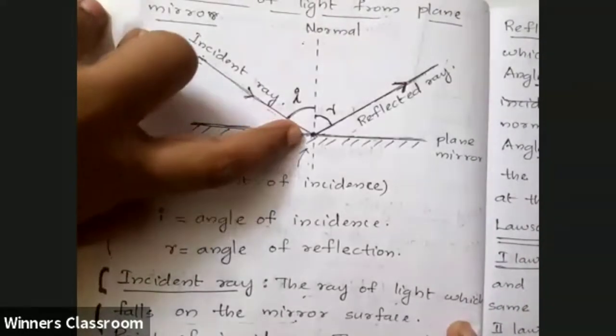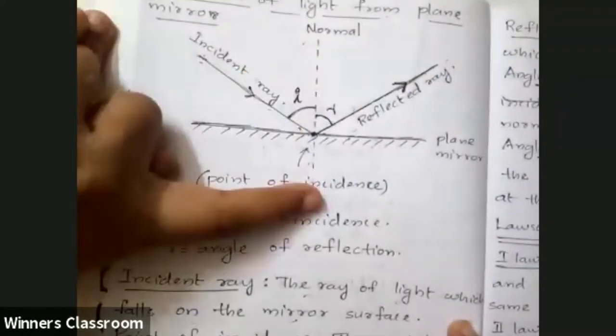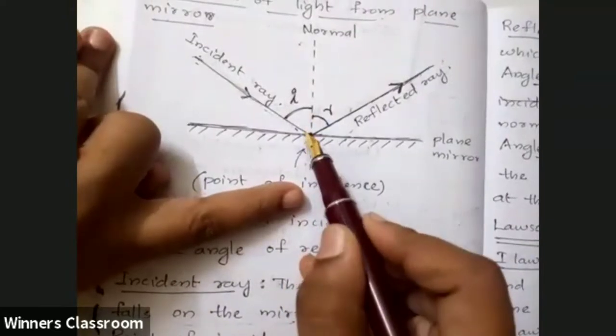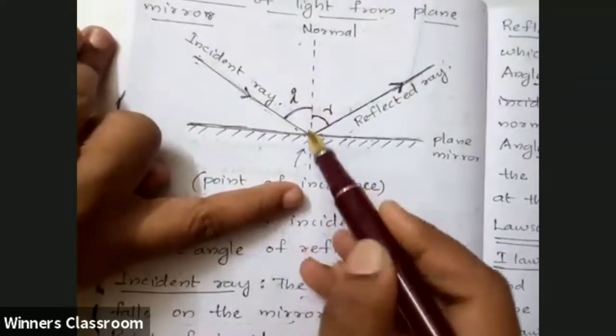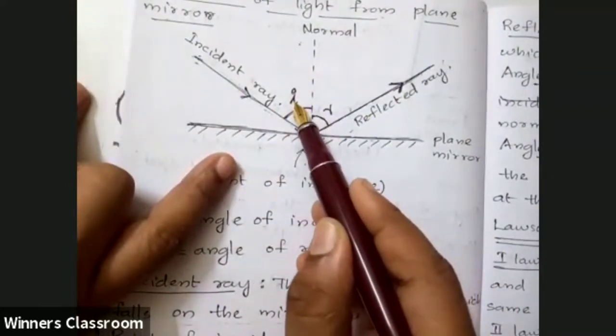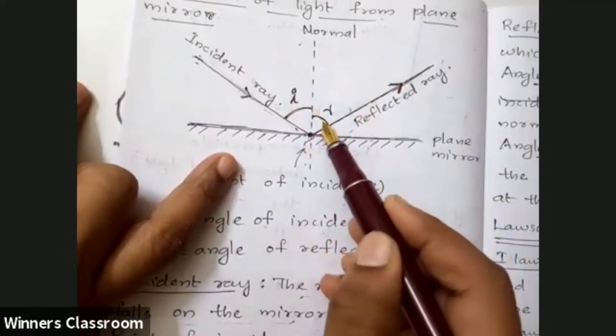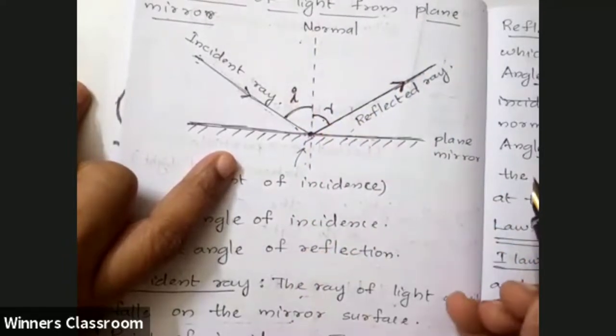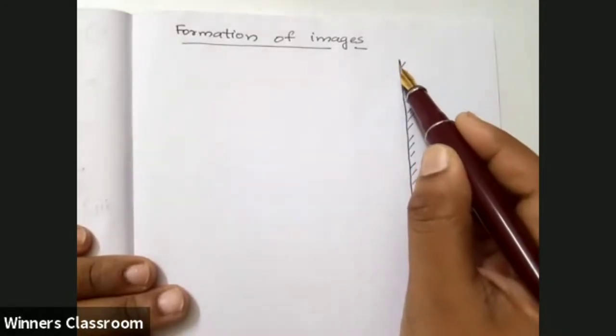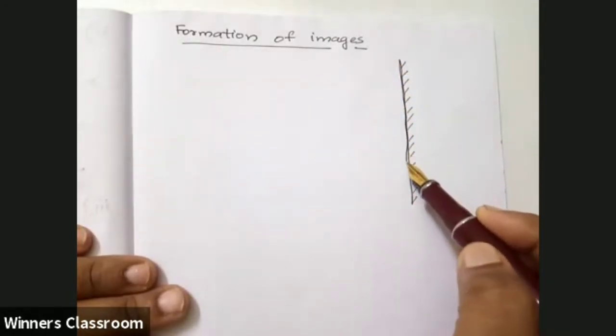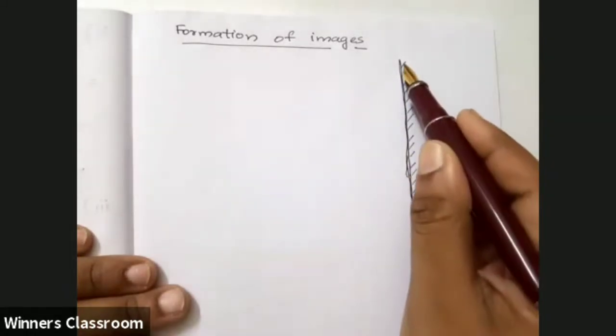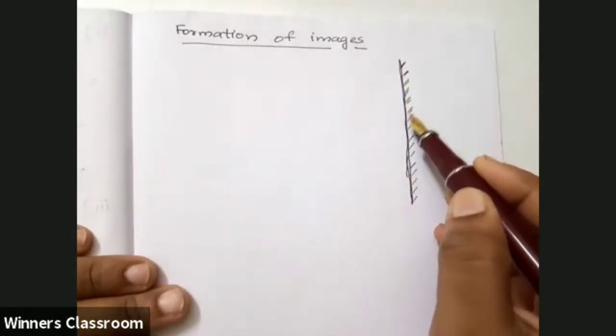The incident ray is reflected. This is the normal at the point of incidence. The angle between the incident ray and normal is I, and the angle with the reflected ray is R. This is the plane mirror - the mirror is the front line, and the back side of the mirror is shaded.